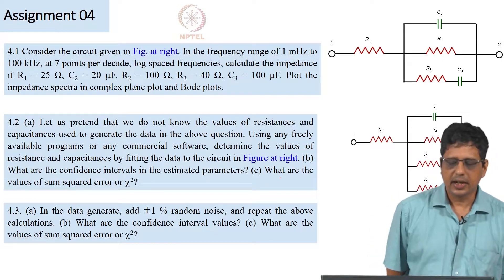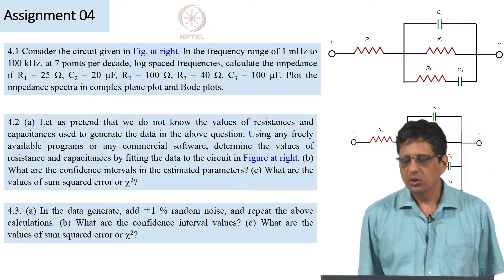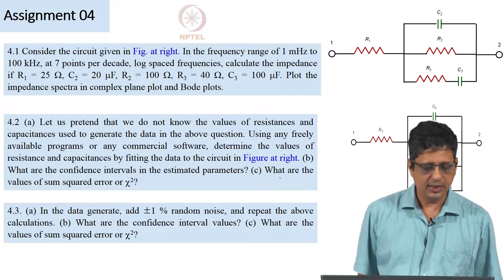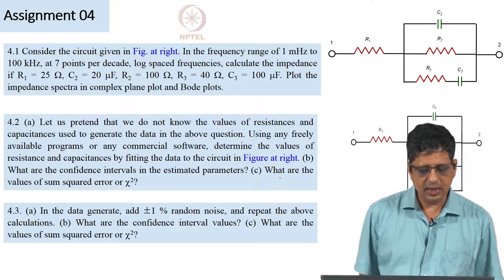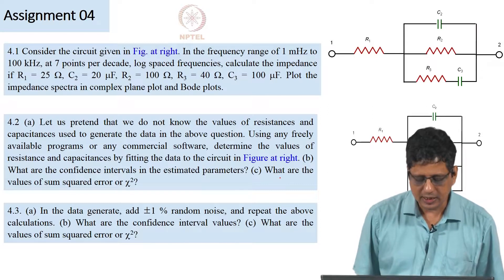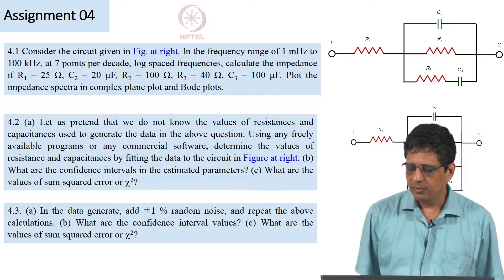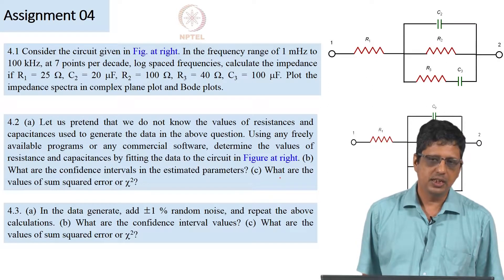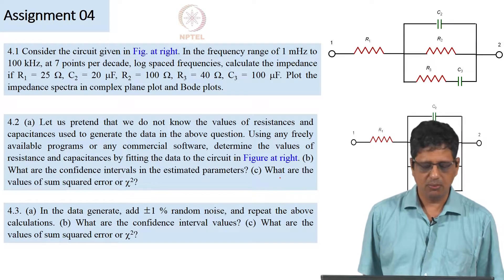Here I would like you to again generate a spectrum for a given frequency range, log spaced frequencies for a set of values: reasonable values 25 ohms for solution resistance, 20 microfarad for double layer capacitance, polarization resistance is 100 ohm, and then the Maxwell elements have 40 ohm and 100 microfarad. You can use this and generate the spectrum and plot it in complex plane plot as well as in Bode plots.